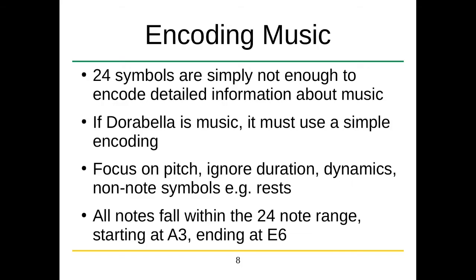What we're going to do is the music. We actually have to not only deal with symbols, we have to deal with notes, and 24 symbols are not enough to encode very much detailed information about music. The MIDI spec has 127 different notes, from C0 to probably eight or ten octaves. If Dorabella is music, we basically want to use a simple encoding. It's unlikely that Elgar was really hopping a ton of octaves if he encoded it in a simple pitch-based manner. So we're going to focus on pitch, ignore duration — assuming every note takes the same amount of time — ignore dynamics, have no rests, and ignore non-note symbols. Furthermore, because we only have 24 symbols, we're going to choose 24 notes from the range A3 to E6, based upon the most common notes that are in our corpus.